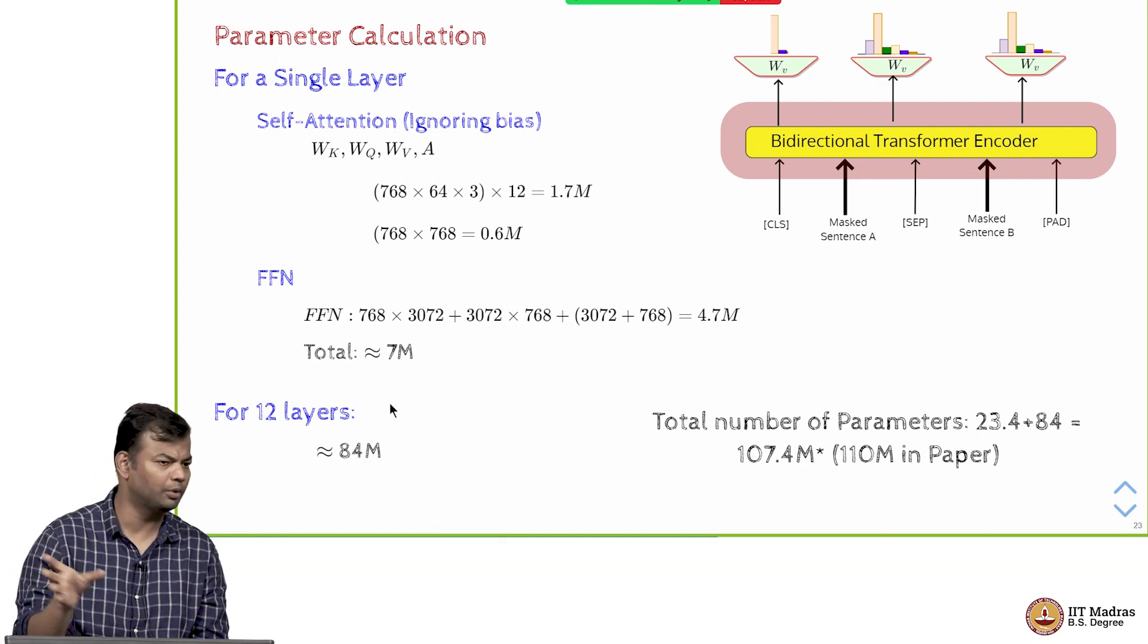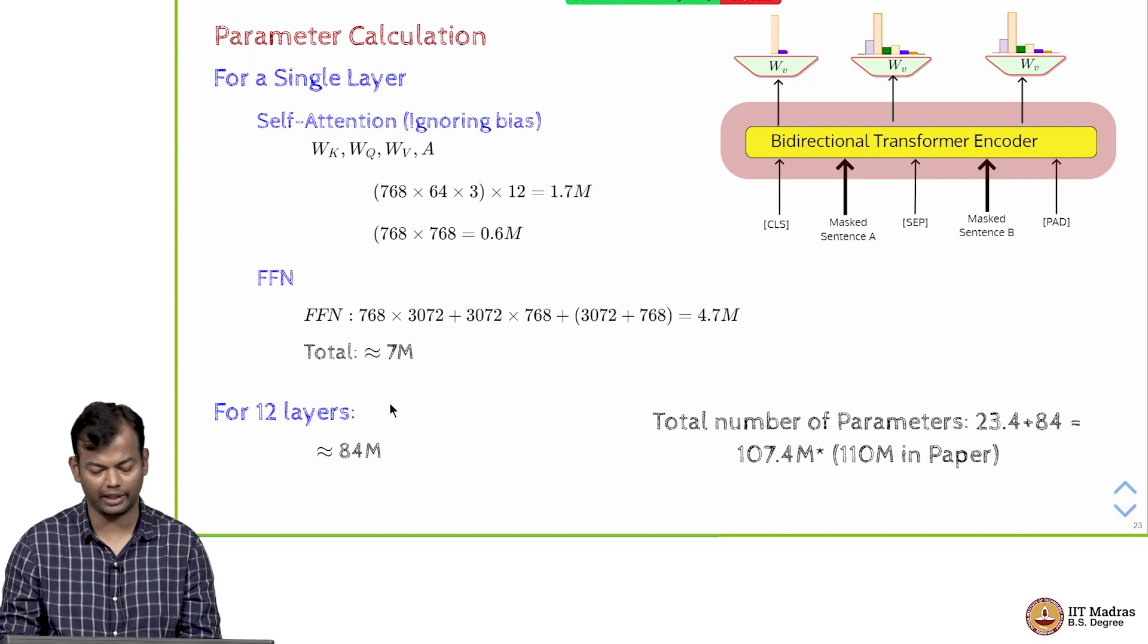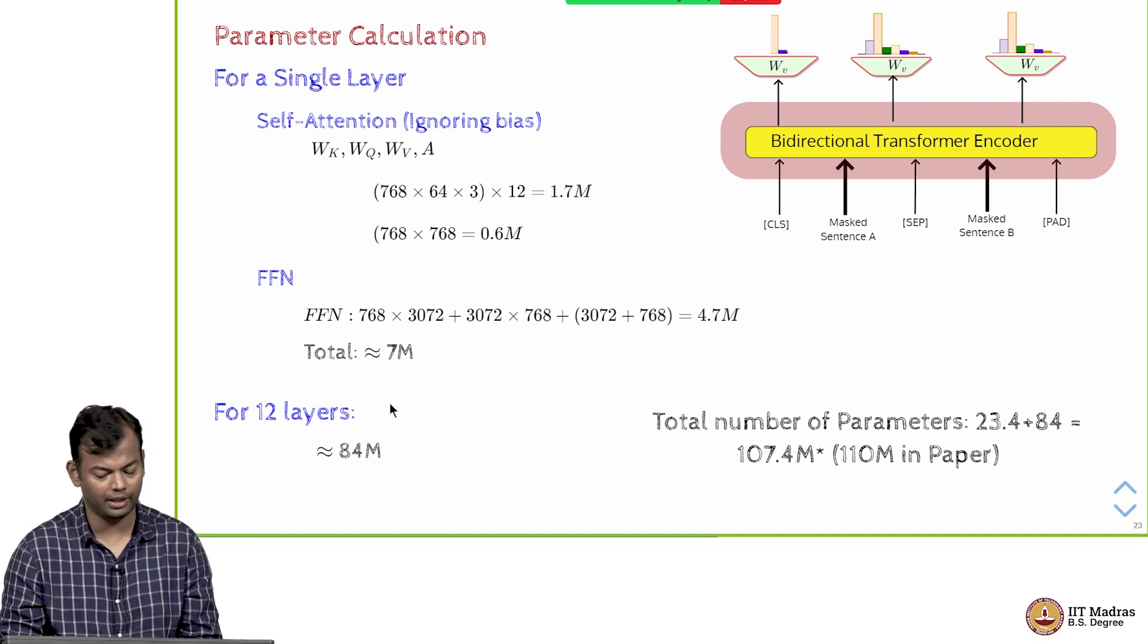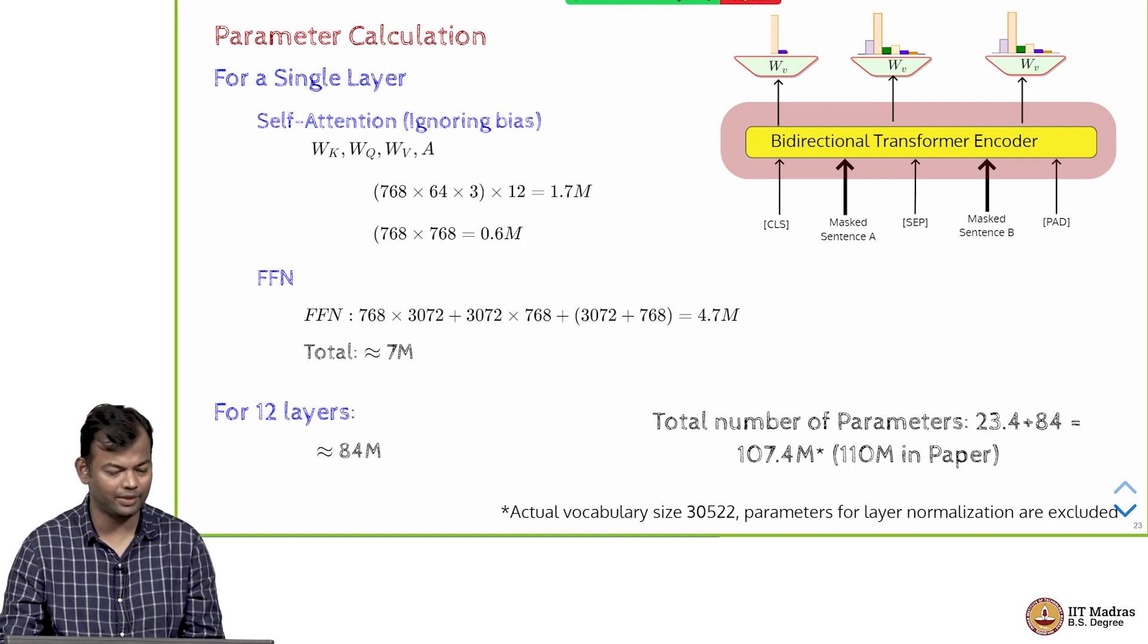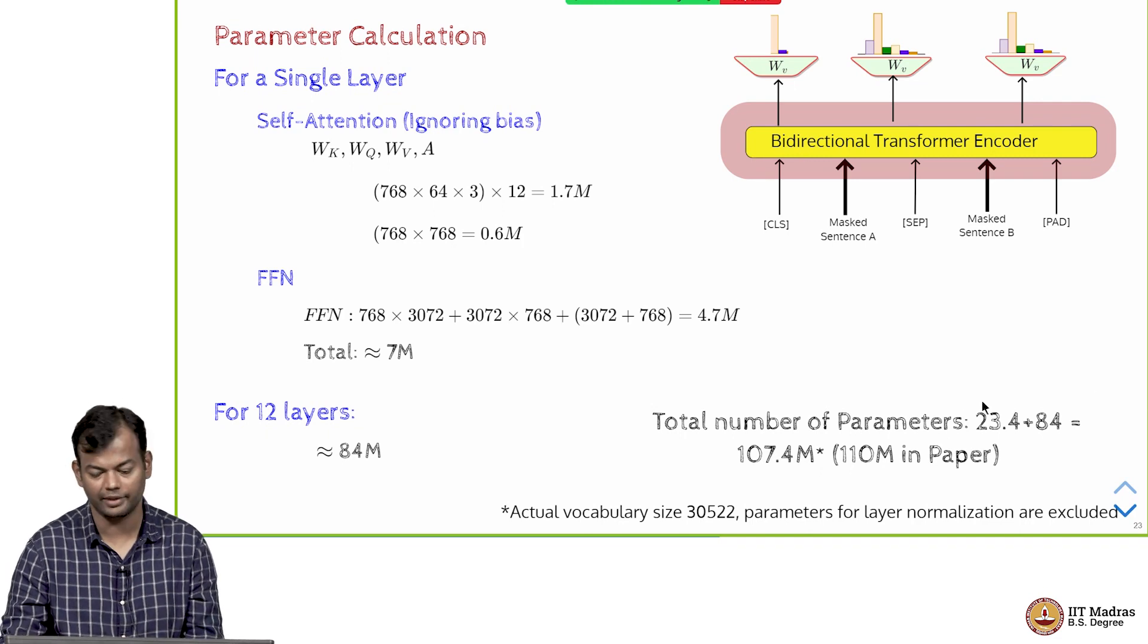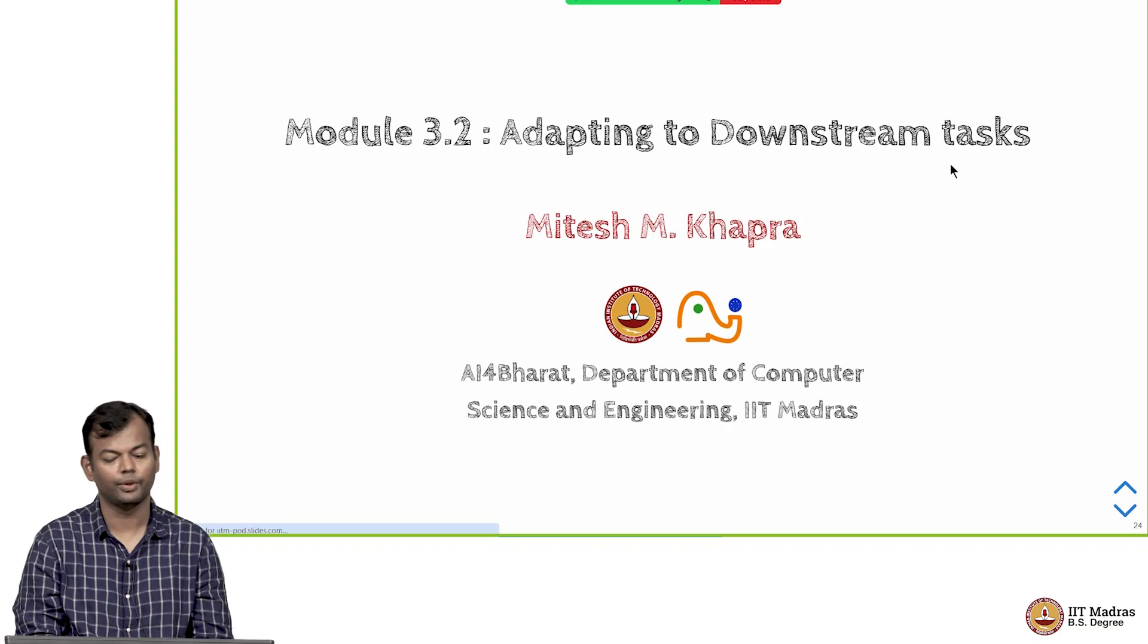This is roughly comparable to what we saw for the GPT model; that was also in the same ballpark. I think it was 117 million or something. Also, the actual vocabulary size was 30,522. We did all the calculations with 30,000 for simplicity, hence there might be slight difference in the number of parameters.